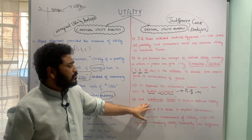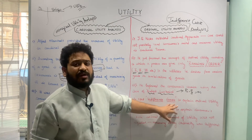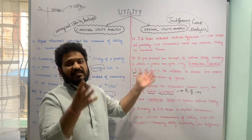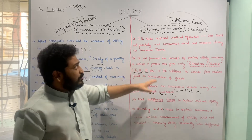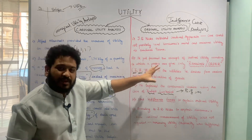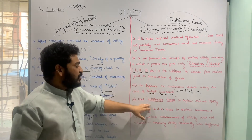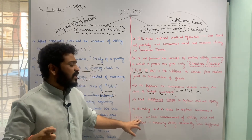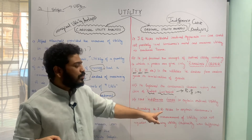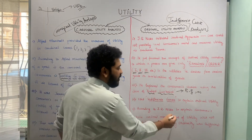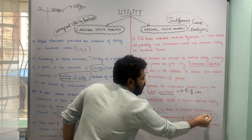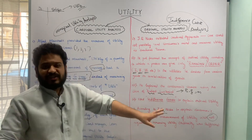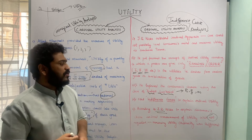Hicks also used the indifference curve analysis to explain ordinal utility. You will learn that when the consumer is in equilibrium, the budget line is touching the highest attainable indifference curve. As we move towards ordinal utility analysis, things will become clear. According to J.R. Hicks, cardinal measurement of utility was not required to explain consumer's choice. Rather, measuring utility ordinally — simply ranking preferences — was sufficient to understand consumer choices.